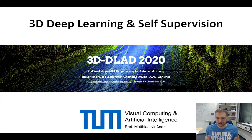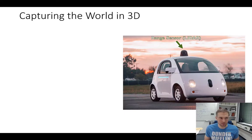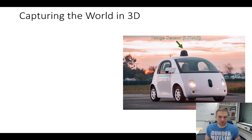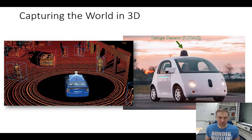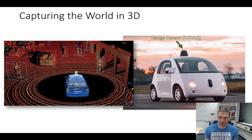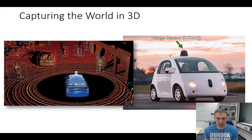We've been talking about deep learning for quite a while, and one thing we are very interested in is capturing the world in three dimensions. We put a lot of sensors on cars — laser sensors, LIDAR — and we want to use all these sensors to capture and understand the 3D environment, eventually making machines such as autonomous cars or robots autonomously interact with our environment.